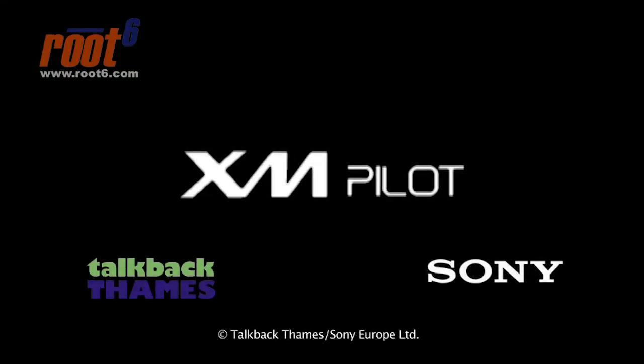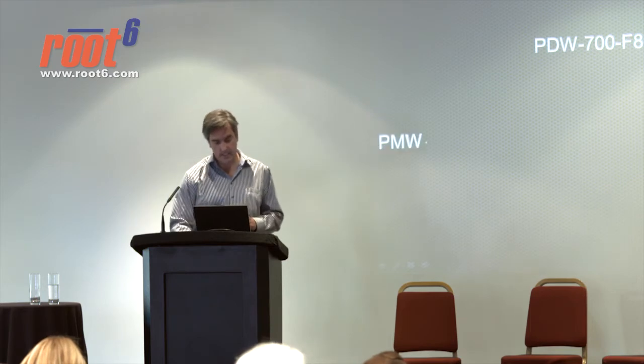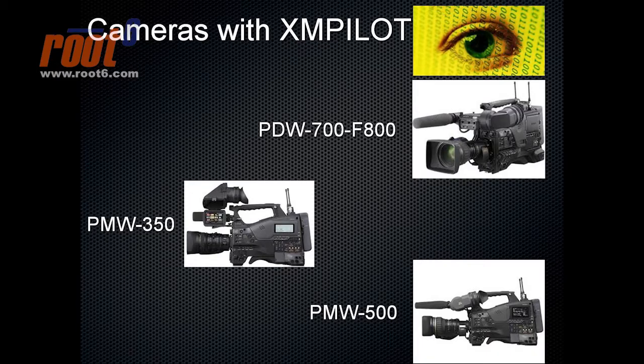What cameras are currently available with XMPilot? We've got the PDW700 and the F800, obviously using XDCAM disc. You've got the PMW350, which we shot with on the last series of Escape, recording onto SXS. And the camera we've used this series is the PMW500, which David has at the back. The Sony F3 will also work with XMPilot, and there's another range of cameras — talk to David and he'll give you the full list.